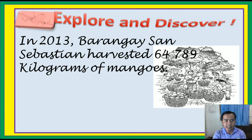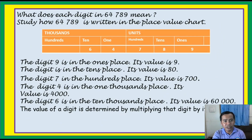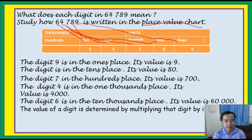In 2013, Barangay San Sebastian had harvested 64,789 kilograms of mangoes. What does each digit in 64,789 mean? Study how 64,789 is written in the place value chart. The digit 9 is in the ones place, 8 is in the tens place, 7 is in the hundreds place, 4 is in the thousands place, and 6 is in the ten-thousands place.